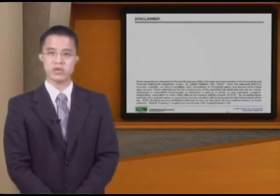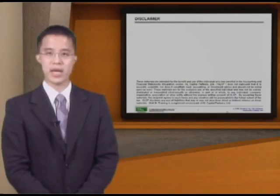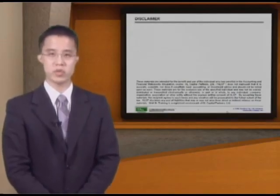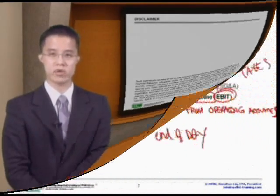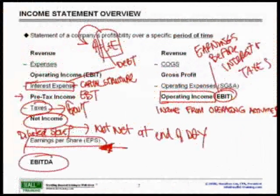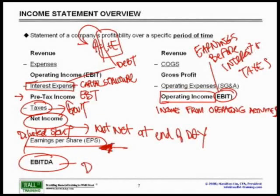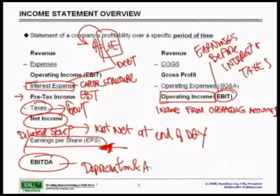Please note that these materials are copyrighted and may not be disseminated or reproduced without the express written approval and consent of Wall Street Trainings. We have a term called EBITDA, which stands for Earnings Before Interest, Taxes, Depreciation, and Amortization. It is arrived at by taking Operating Income, or EBIT, plus the D&A amount.